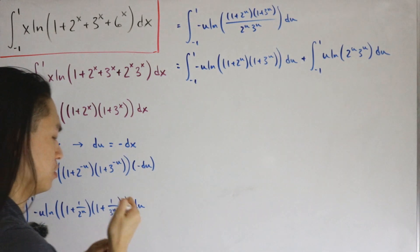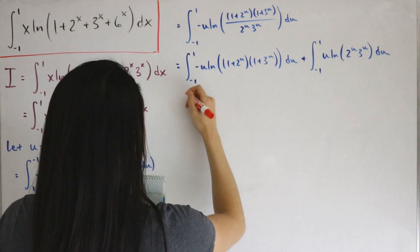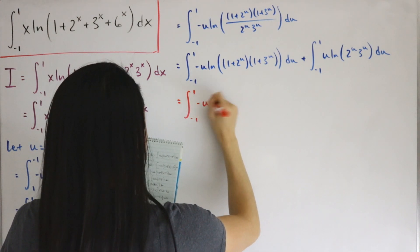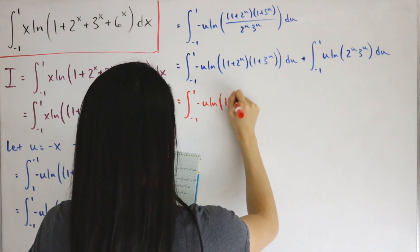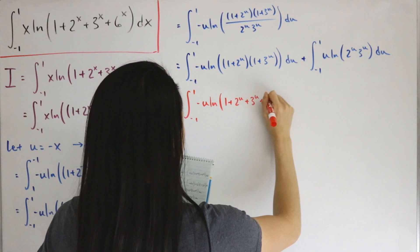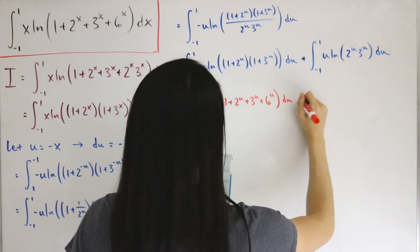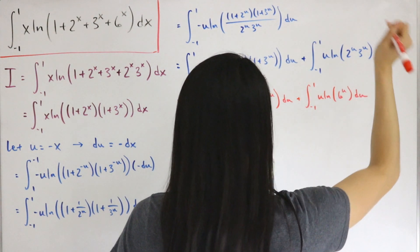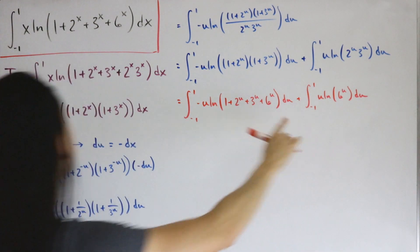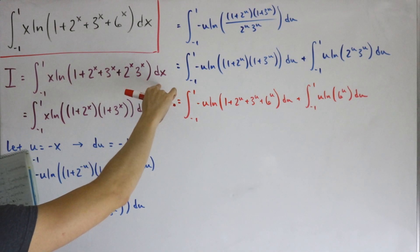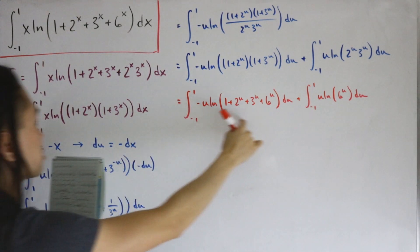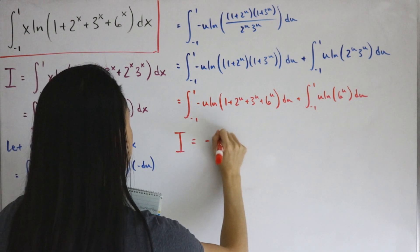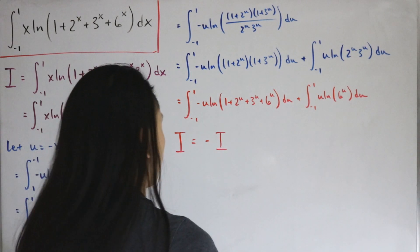Expanding the first part back together with a different marker, we get the integral from -1 to 1 of -u · ln(1 + 2^u + 3^u + 6^u) du, plus the integral from -1 to 1 of -u · ln(6^u) du. The first integral is exactly the same as capital I but with variable u — since u is a dummy variable, this entire part equals -I.